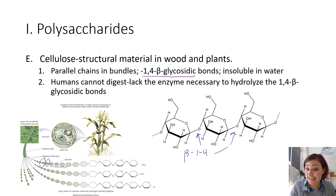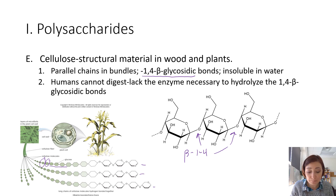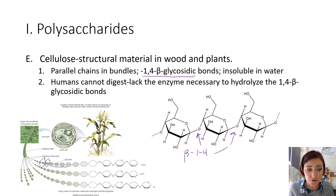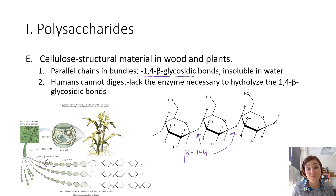Other animals can eat cellulose — they can eat grass and plants — and they're able to digest it because they have a relationship with an enzyme. Ruminant animals like cattle and deer have bacteria in their gut. Those bacteria have the enzyme able to hydrolyze the beta-1,4 linkage. Without this symbiotic relationship with bacteria in their gut, they would not be able to break cellulose down. So they can actually derive nutritional benefit from cellulose, whereas we cannot.